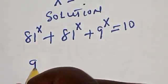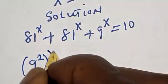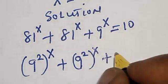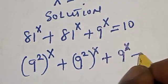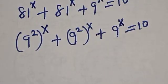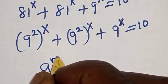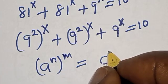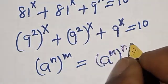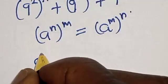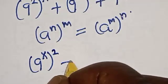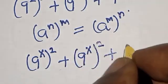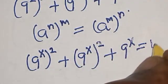81 is simply written as 9 squared, raised to power s, plus 9 raised to power s is equal to 10. Remember this rule: a raised to power n, raised to power m, is equal to a raised to power m times n. Now this becomes 9 raised to power 2s plus 9 raised to power s is equal to 10.